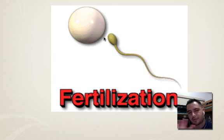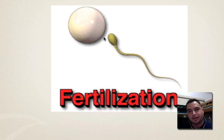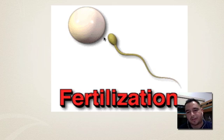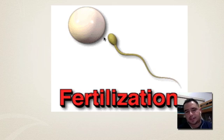So those are the four things that cause variety. Remember: crossing over, the law of independent assortment where chromosomes can line up in many different ways, the law of segregation where mom and dad homologous pairs separate and go to different cells, and fertilization — where dad with completely different instructions fertilizes the egg with completely different instructions, producing a new, unique child.